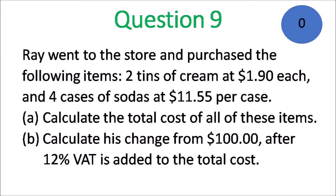Question 9. Raven went to the store and purchased the following items: 2 tins of cream at $1.90 each, 4 cases of sodas at $11.55 per case. Calculate the total cost of all these items. Calculate the change from $100 after 12% VAT is added to the total cost.